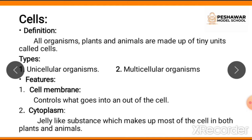Cells are also called the building blocks of life because cells are the basic structures that plants and animals — living organisms — are composed of. Although there are many different types of cells that all have different jobs to do, most cells have something in common. To give an example, think of your classroom: there is a teacher, students, a proctor, a uniform in-charge, a covered in-charge — everyone has different duties. Similarly, in a cell the same thing happens: different parts perform different work.